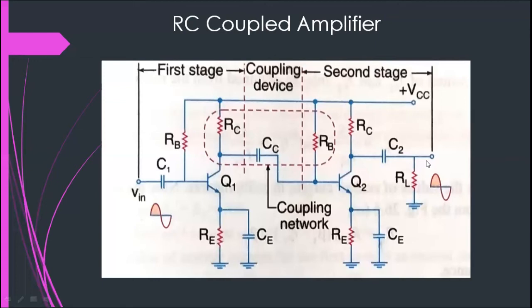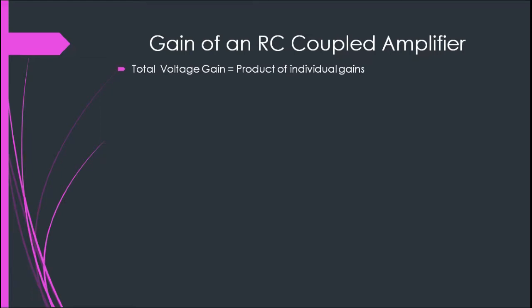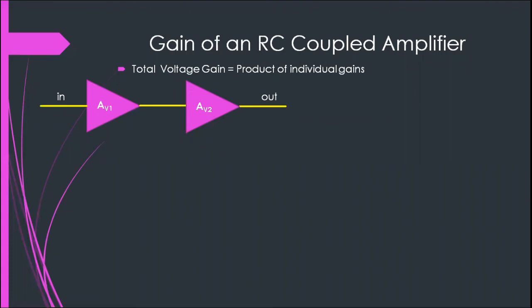One more important feature of the RC coupled amplifier is that the output signal and input signal of a two-stage RC coupled amplifier are in phase, because the phase has been reversed twice by the amplifier — reversed first at Q1, and again reversed by transistor Q2. So the input and output signals will be in phase. The total voltage gain is the product of the individual gains. In a two-stage amplifier, let the first voltage amplification be AV1 and the second be AV2 for the two stages respectively.